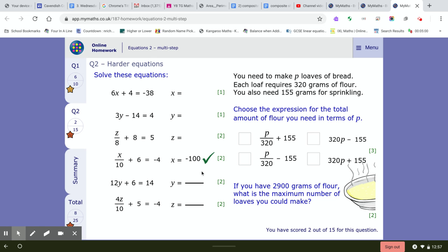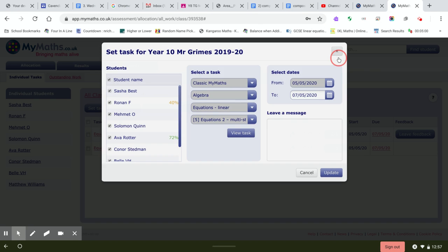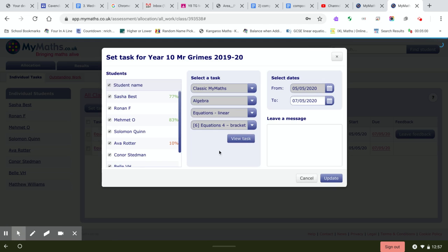Okay there you go. So there's some examples from the multi-step ones. If we now look at some examples from the brackets, hopefully we have time. Some of you have done it before but this is just an assessment of it.